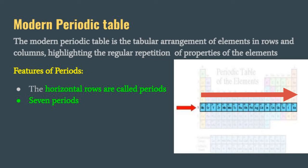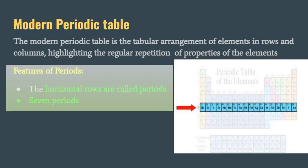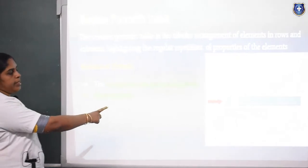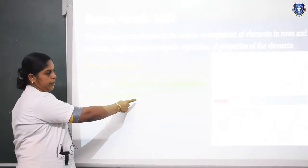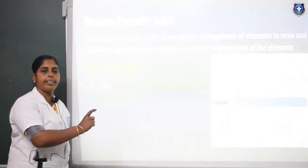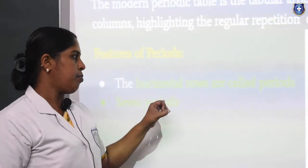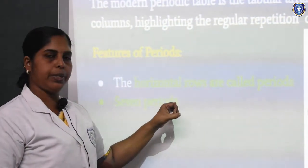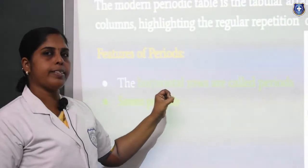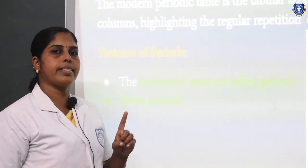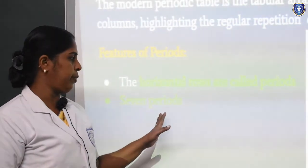Horizontal rows are called periods. There are 7 periods in the modern periodic table. The horizontal rows are known as periods.